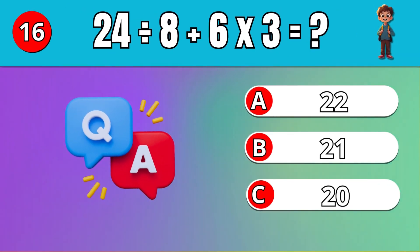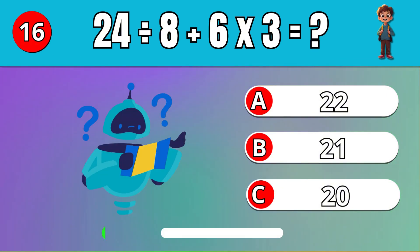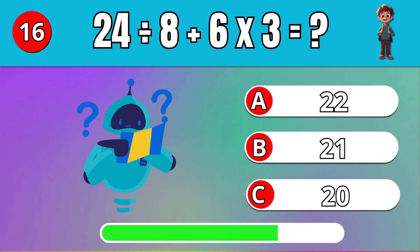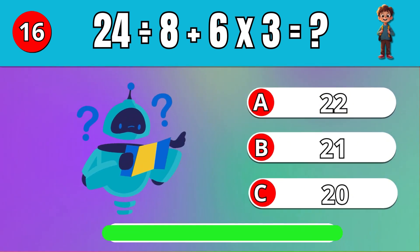What is 24 divided by 8 plus 6 times 5? 21.